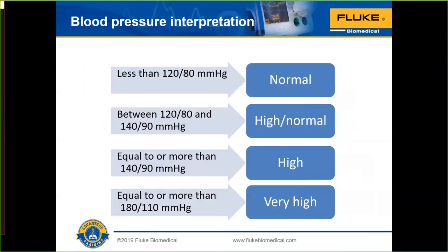Here are some of the norms, in case you're wondering whether your blood pressure is normal or abnormal, and what the nurse or doctor will be thinking. If your blood pressure is less than 120 over 80, it's still in the range of normal. Between 120/80 and 140/90, you're high-normal to high. Equal to or above 140/90, it's definitely high. Equal to or above 180/110, it's very high — you'll want to start talking to a physician. High normal is also an area of concern. These are the clinical ranges the doctor and nurse care about when they look at the NIBP monitor.